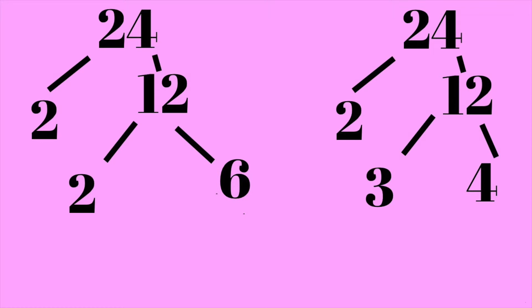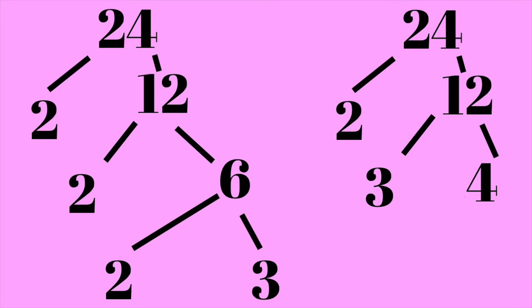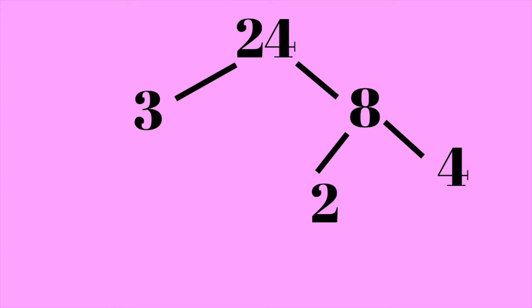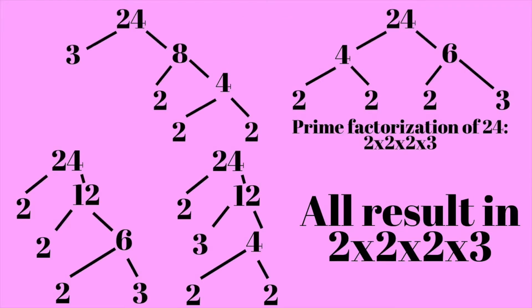12 can be the product of 2 and 6, or 3 and 4. If we use 2 and 6, then 6 is not prime but 2 is, so we divide 6 further into 2 and 3. If we separate 12 into 3 and 4, then 3 is prime but 4 can be further divided into 2 and 2. There is one other way to divide 24: as the product of 3 and 8. Here 3 is prime; 8 is divisible by 4 and 2, and 4 is the product of 2 and 2. Every single one of our trees, no matter how we started, gives us 2 times 2 times 2 times 3, which equals 24.